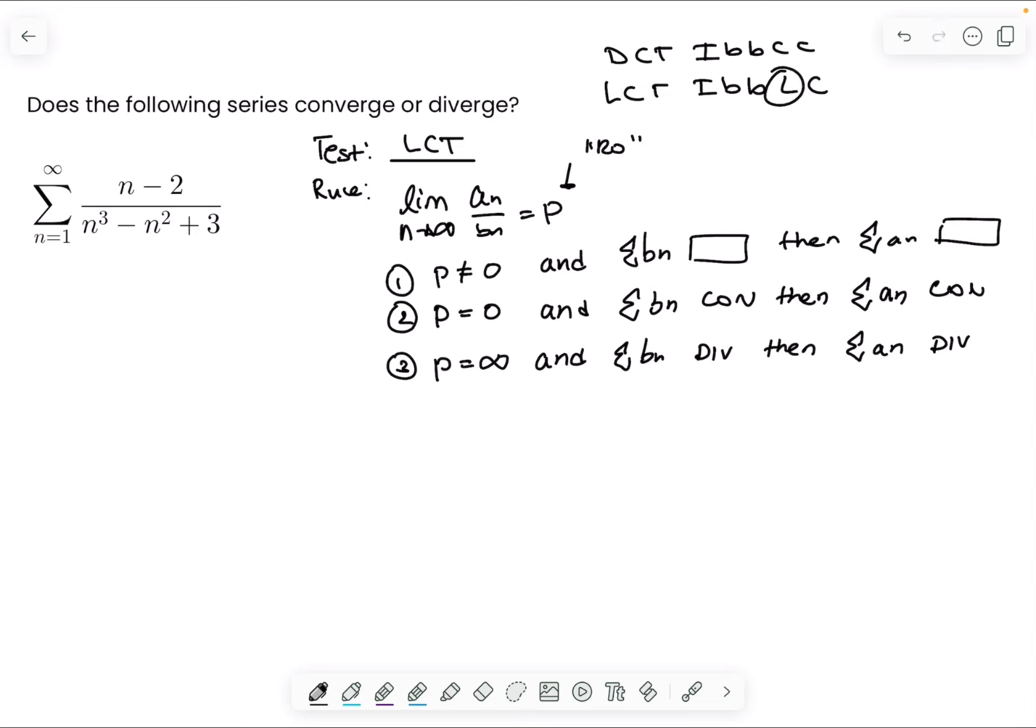So remember that DCT is IBBCC, so LCT is IBBLC. So there's only a one letter difference and it's easy to remember because L for LCT. So I stands for information. So this is the information that we know plus the information that we need. We know that a_n is always the given sequence. b_n is what we need, we don't know what that is, which brings us to our second step, which is find b_n.